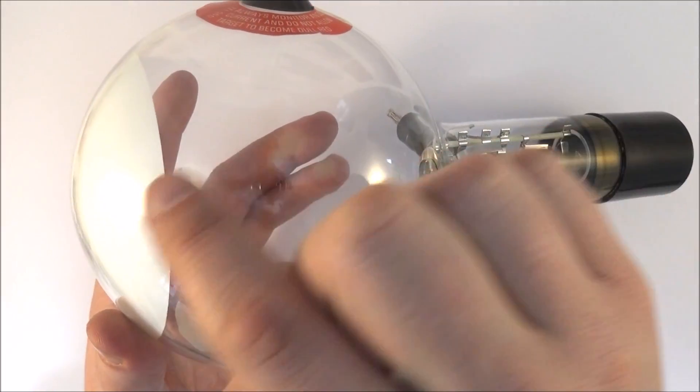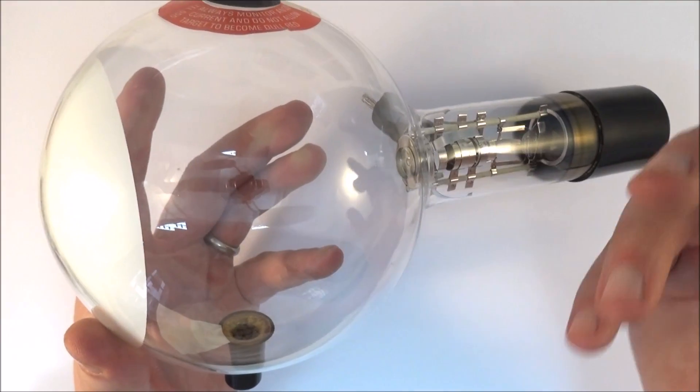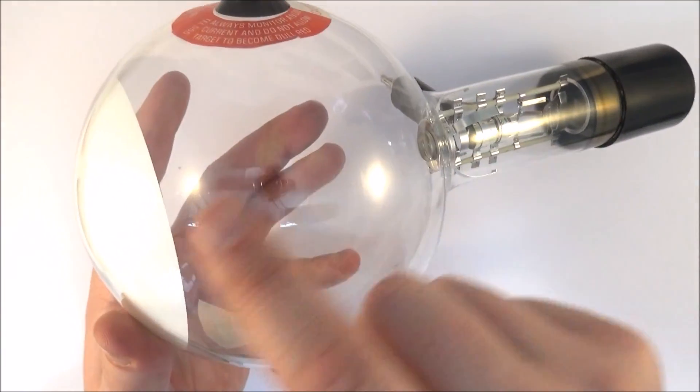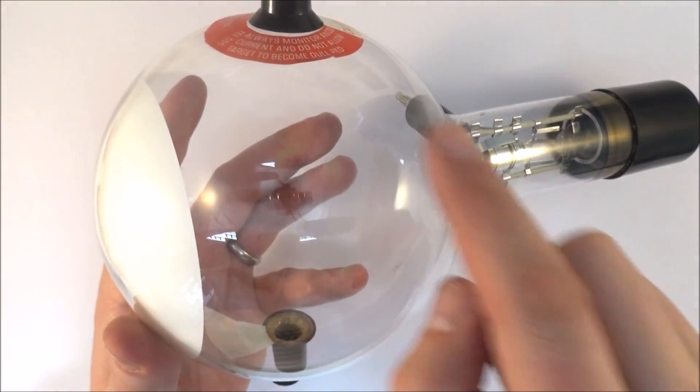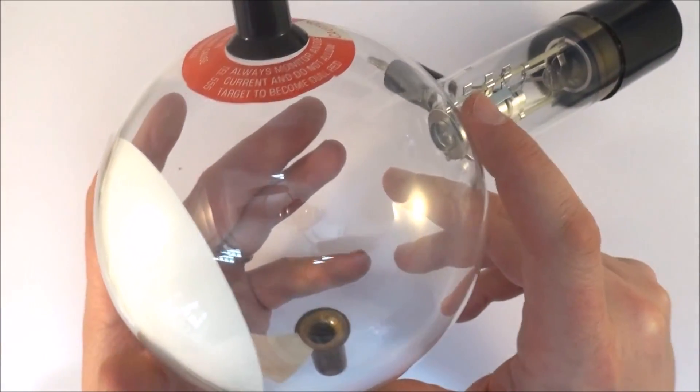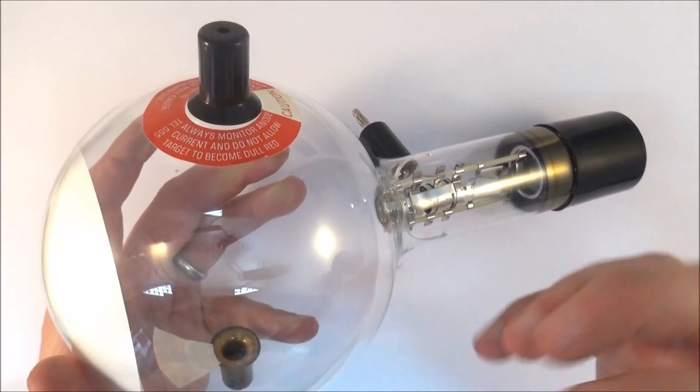Basically what we then get is this nice circular path showing again by the Lorentz force that electrons or charged particles moving in a magnetic field applied by these Helmholtz coils do actually travel in a circular path. So that's a review of the five main tubes that we need to consider for A-level physics.